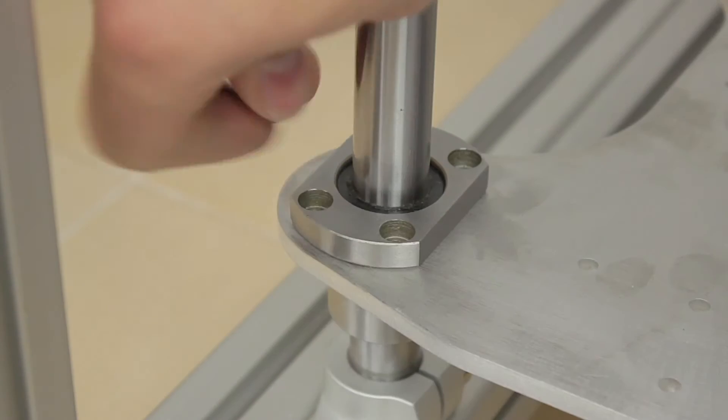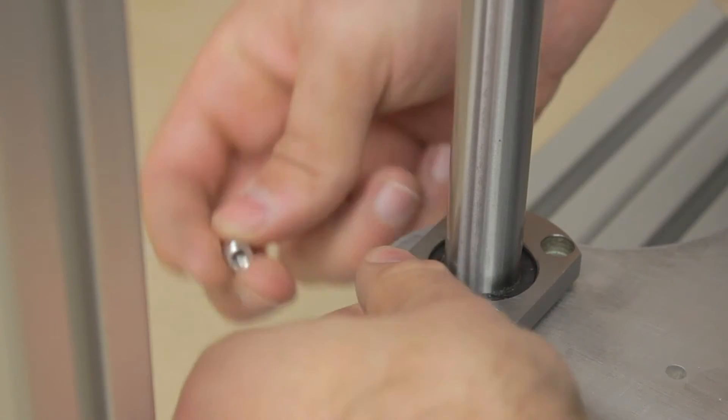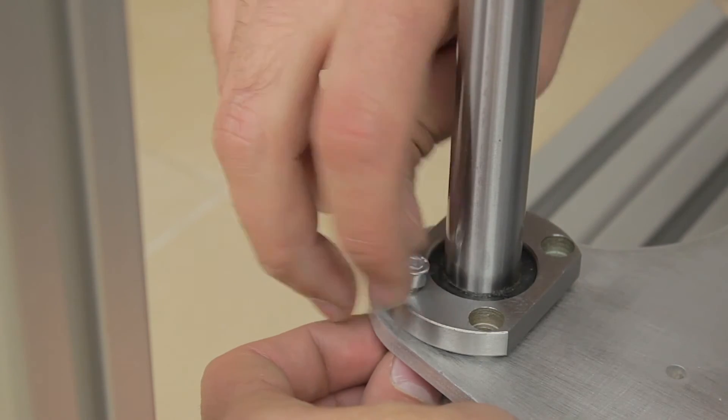Okay, so next we'll install the four bolts on each of the linear bearings, and we'll do that in all four corners.